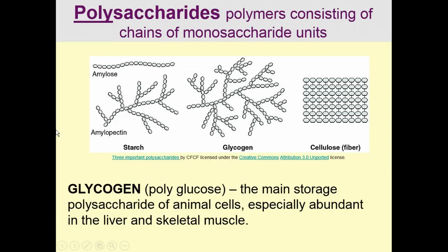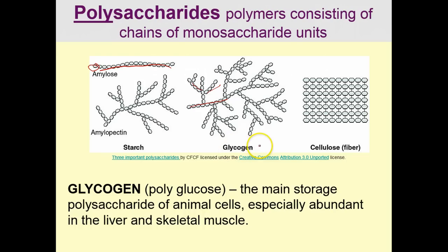Finally, we have polysaccharides. These are polymers consisting of chains of monosaccharide units. In this diagram, each little hexagonal shape is a six-carbon sugar. Amylose is a straight-chain polysaccharide, whereas glycogen is a branched-chain polysaccharide with many different branches off of each chain. Glycogen is the main storage polysaccharide of animal cells, and is especially abundant in the liver and skeletal muscle. In skeletal muscle, you need a lot of energy quickly, so we get that energy by breaking off one of these glucose molecules on the end of glycogen and putting it through the process we'll talk about next, which is metabolism.